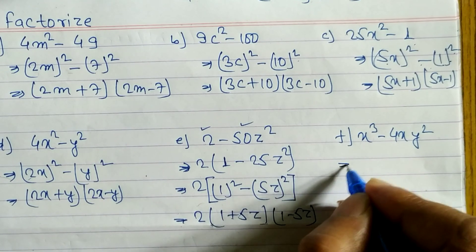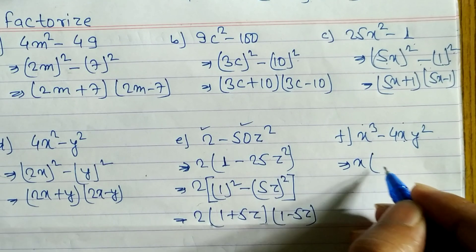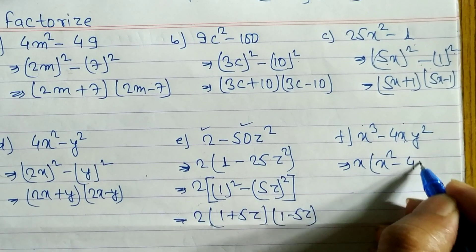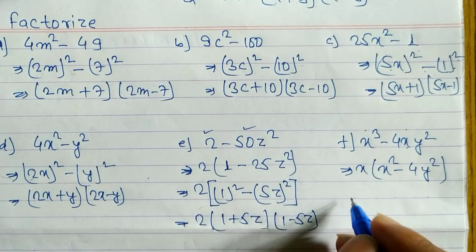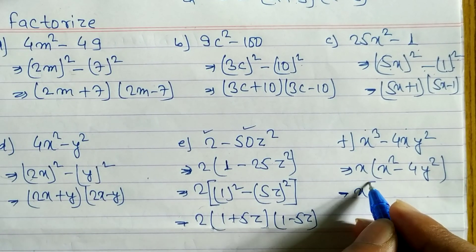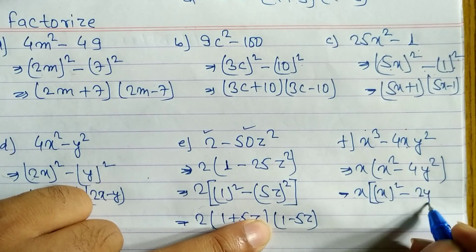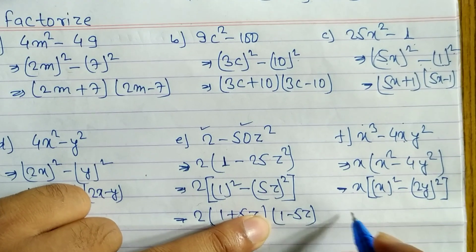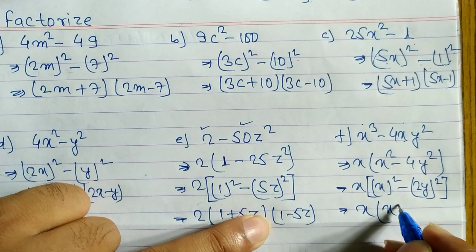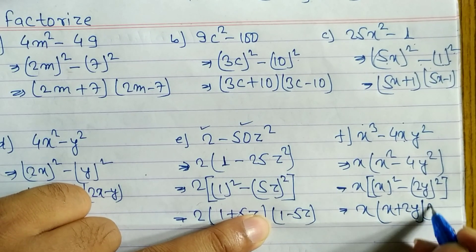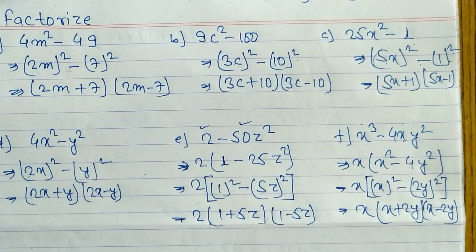For problem f: x³ - 4xy². We can see x is common, so we take x out: x(x² - 4y²). Now we convert this to x[(x)² - (2y)²], since the square root of 4 is 2. With a = x and b = 2y, the answer is x(x + 2y)(x - 2y).